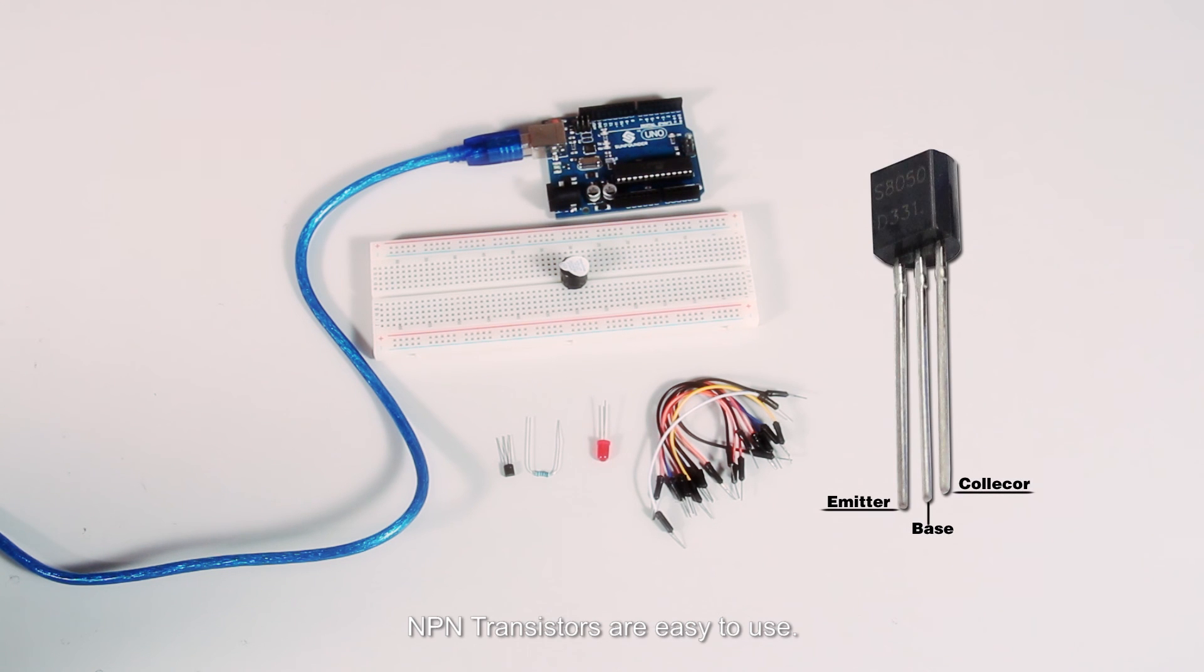NPN transistors are easy to use. The left pin is emitter electrode attached to the power source. The middle pin is base and the right pin is collector.